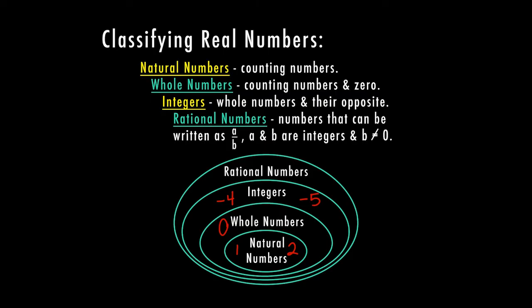Then we have our rational numbers. Rational numbers are numbers that can be written as a over b, where a and b are integers and b cannot be zero. This is going to include all of your fractions. We can also write those fractions as decimals. For example, the fraction one half — you can write that as a decimal. In this case it would be a terminating decimal because the decimal ends at the number five, which is in the tenths place. It could also include a decimal that repeats. If I have one and three tenths repeating, that little line over the three indicates that it's repeating forever — that would also be a rational number.